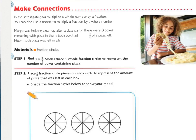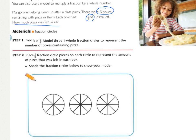Looking at the making connections. Margo was helping clean up after a class party. There were 3 boxes remaining with pizza in them. Each box had 3 eighths of a pizza left. How much pizza was left in all? Underline what you're being asked to find and circle the important information. You should have underlined how much pizza was left in all, circled 3 boxes, and then with 3 eighths of a pizza left. That leads us to 3 times 3 eighths. So we would have 3 circles with 8 pieces, and then we need to place 1 eighth of a fraction circle piece, which we're just going to shade them in, to represent the amount of pizza that was left in each box.